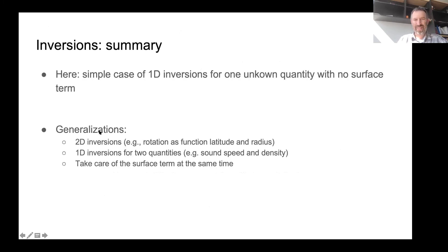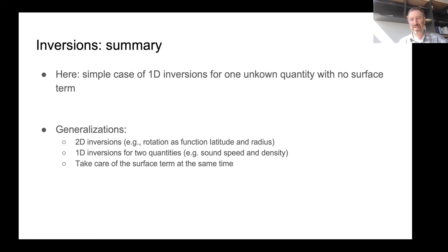By way of summary on methods: I showed the simple case of 1D inversions for one unknown quantity with no surface term. There are all kinds of generalizations — for example, 2D inversions for rotation as a function of latitude and radius, 1D inversions for two quantities simultaneously such as sound speed and density, and handling the surface term at the same time.